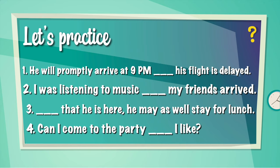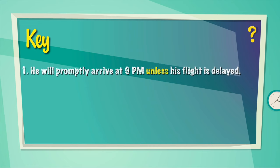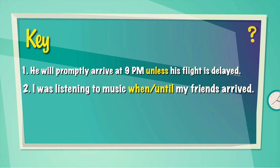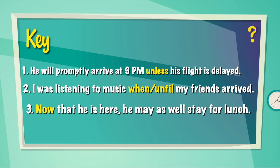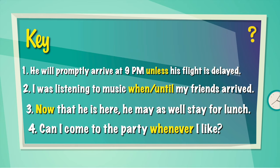Now let's practice. Complete the sentences with the subordinating conjunction. Pause the video for five minutes, and then I'll give you the key. Now that your answers are ready, let's look at the key. One: 'He will promptly arrive at 9 p.m., unless his flight is delayed' — unless is the subordinating conjunction. Two: 'I was listening to music when / until my friends arrived.' Three: 'Now that he's here, he may as well stay for lunch.' Four: 'Can I come to the party whenever I like?' — whenever is your conjunction.